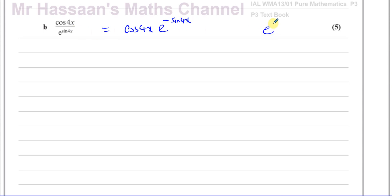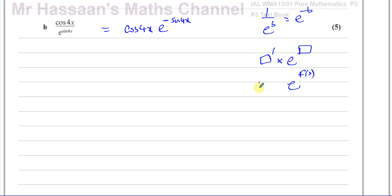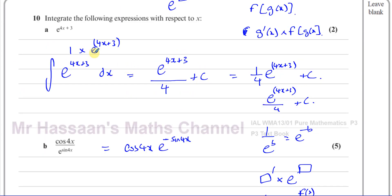Now we have the situation where we have e to the power of something multiplied by the differential of that something. We have e to the power of some function of x, and outside it is the differential of that function. If you differentiate minus sine 4x, you get something involving cosine 4x. So cosine 4x is of the form of the differential of sine 4x — if you differentiate sine 4x, you get cosine 4x. The form is the same. Just like in part A, the coefficient might differ but it's a constant, so we can proceed.